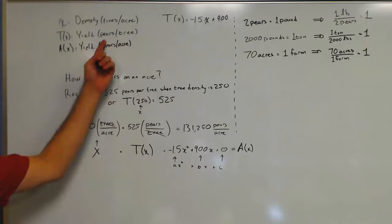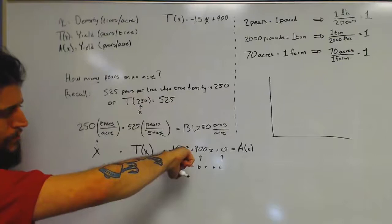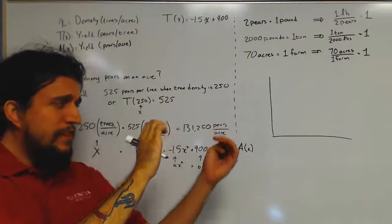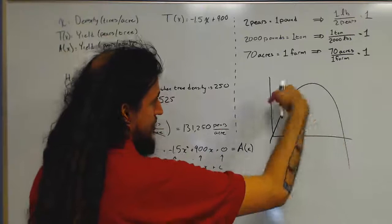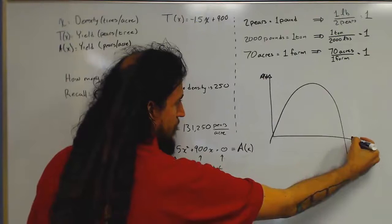If we were to graph this guy, we know that seeing that the leading coefficient, negative 1.5, is less than zero, so we have a parabola that opens down. I'm just spitballing here. I don't know where it intersects the x-axis or anything like that. I'm just drawing an upside-down parabola here. A of x is going to be on this axis. X is on this axis.